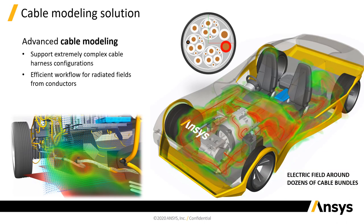We also have an advanced cable modeling solution in HFSS. When thinking about cables in a car — with dozens of miles of cables and hundreds or thousands of conductors in cross-section — simulating that using rigorous finite element methods is not practical. In HFSS, we have a workflow where we solve the cross-section of cables using a transmission line solver, then map the fields onto the bundles in HFSS. On the right side, you can see several wiring harness bundles shown as red cylinders with the electric field around them generated by specific signals within each bundle, allowing us to simulate full vehicles with hundreds of conductors.